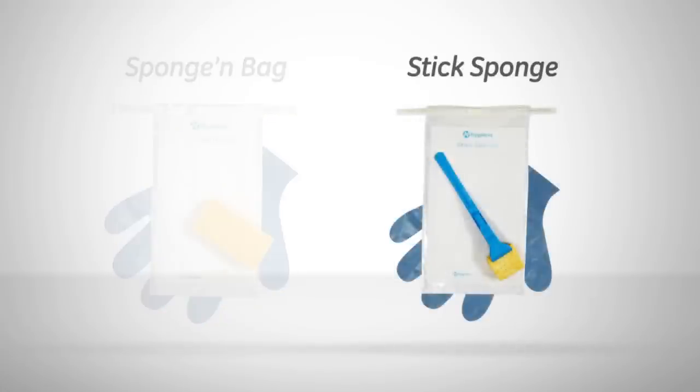For harder-to-reach areas, stick sponge comes with an easy-to-release stick that allows sample collection without directly handling the sponge, making it easier to reach into drains, pipes, and around equipment.